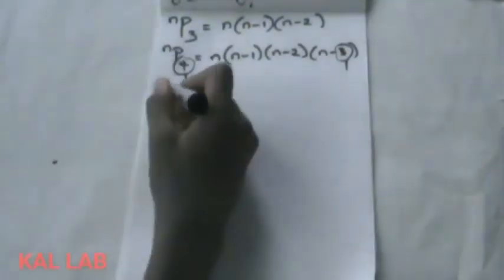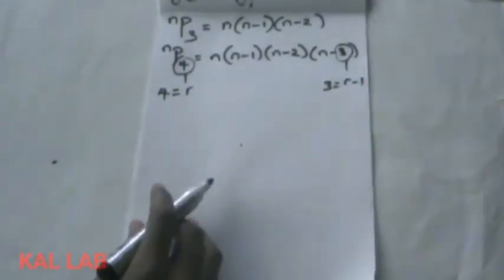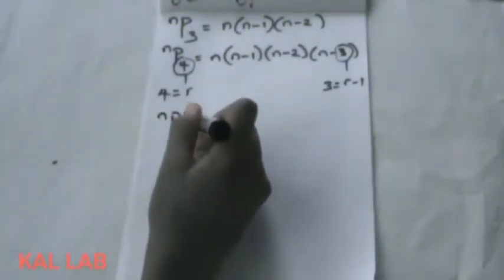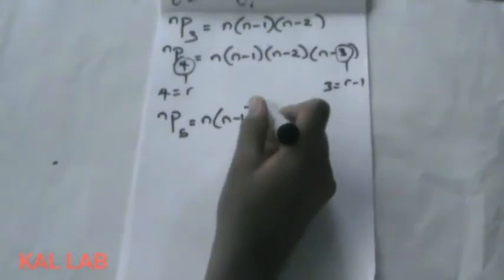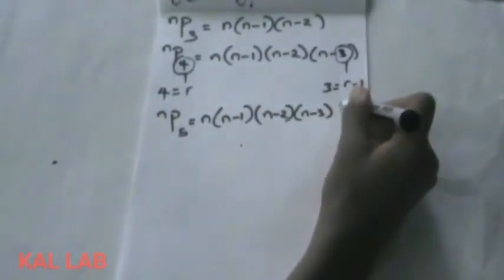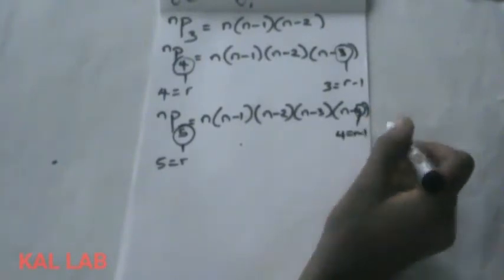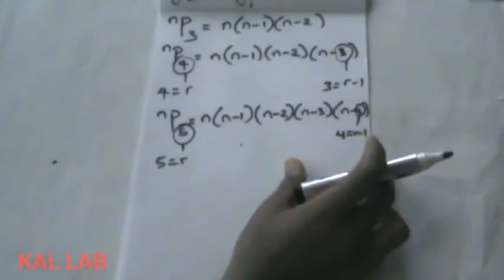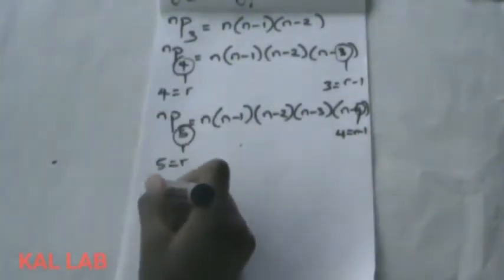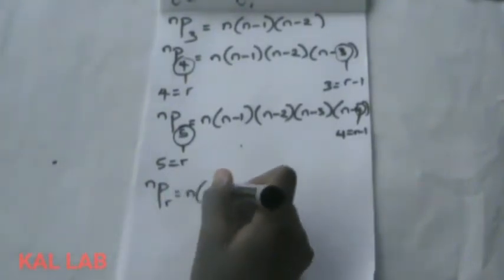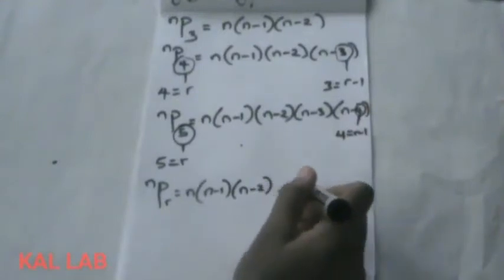We see 4 here and we see 3. If 4 equals r, then 3 would equal r minus 1. Now let me show you again. nP5 would be n, n minus 1, n minus 2, n minus 3, and finally n minus 4. So if 5 equals r, then 4 equals r minus 1. From this we can establish the fact that nPr would be n, n minus 1, n minus 2, down to n minus r minus 1.